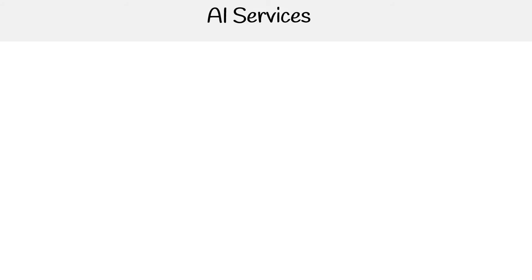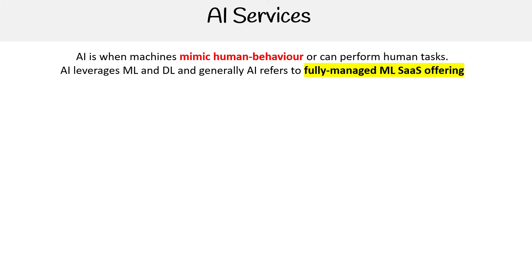Hey, this is Andrew Brown from ExamPro, and we are looking at the AI services offering for Google Cloud Platform. AI is when machines mimic human behavior or can perform human tasks, and AI leverages ML and DL. Generally, AI refers to fully managed ML SaaS offerings.